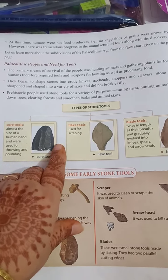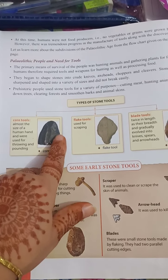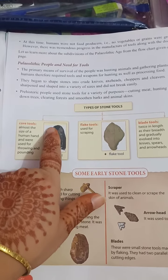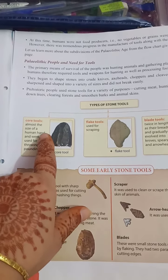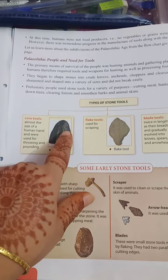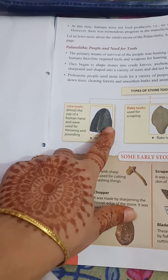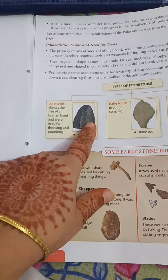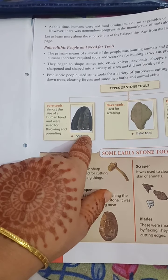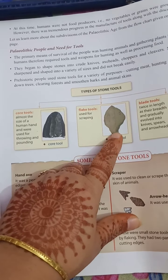Now we can see the types of stone tools. The first one is core tools. Core tools are round from the top and can be held properly — almost the size of a human hand. They were used for throwing and pounding. These stones were used for throwing and killing animals.